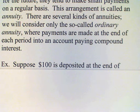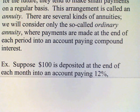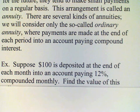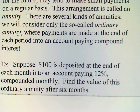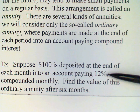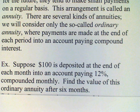So for example, suppose that we agree to deposit $100 into an account at the end of each month, and the account pays 12% annual interest compounded monthly. Find the value of this ordinary annuity after six months. Now of course 12% is an unrealistic rate of interest these days; nevertheless we'll use this because it makes the calculations simple.